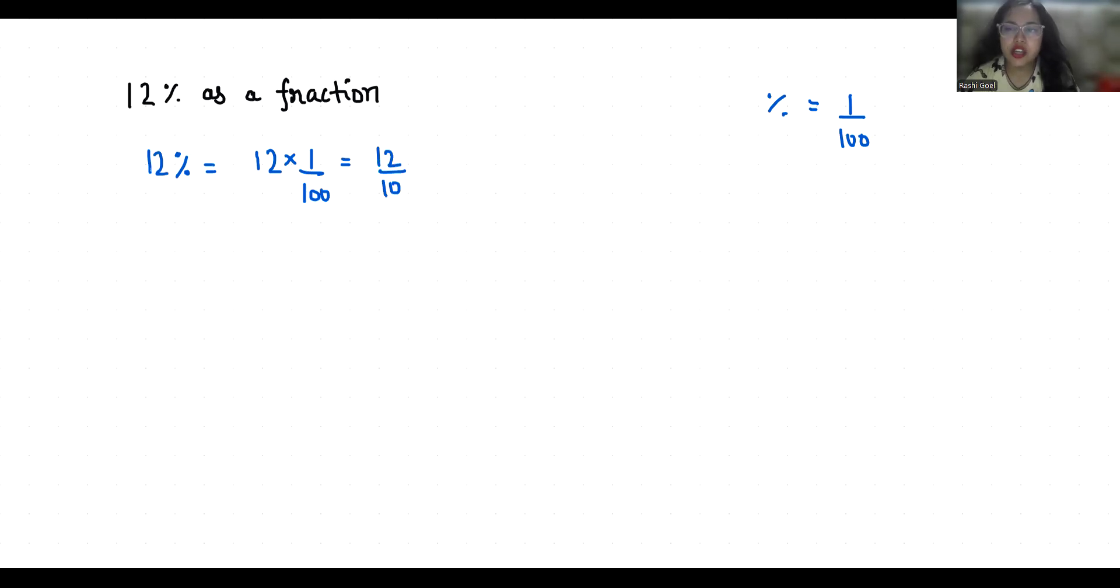So now it comes in fraction form, that is P by Q form. Now we are going to reduce it. Both are even so I'm going to divide by 2 in numerator and denominator, so 6 by 50. Again you can divide it by 2, so 3 by 25.